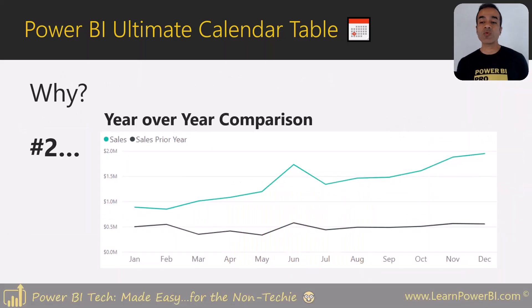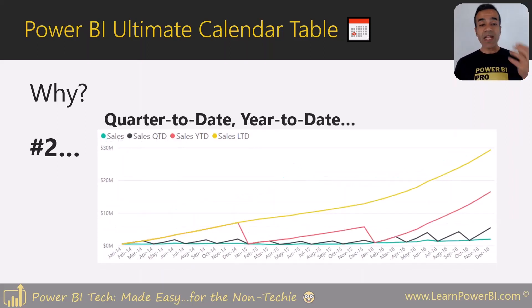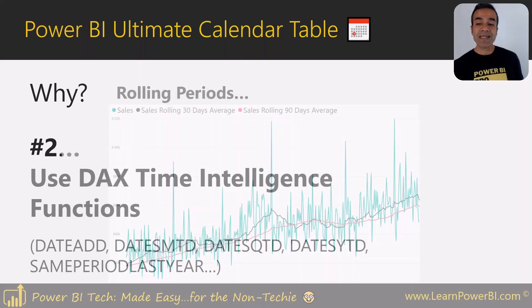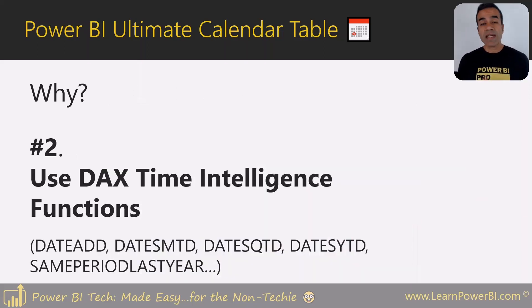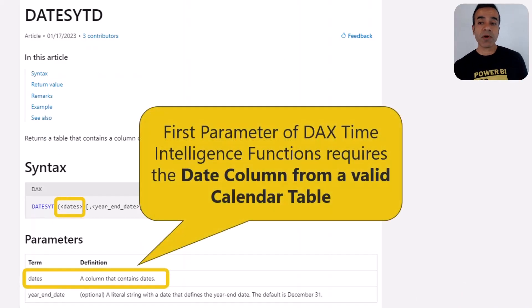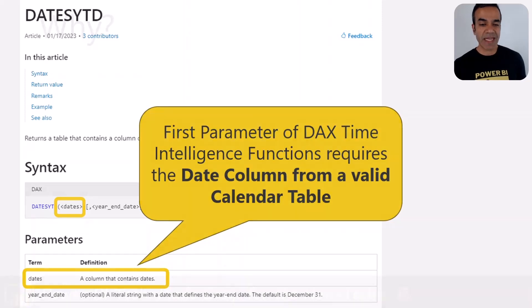Number two is about time intelligence — things like year-over-year comparison, quarter to date, year to date data, rolling periods, or other advanced calculations in Power BI time intelligence. You accomplish these using DAX time intelligence functions, which are fun and easy to use. But what do all of them have in common? All of them, as their first parameter, expect you to pass the date column from a valid calendar table.